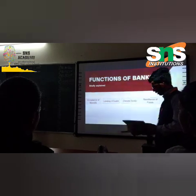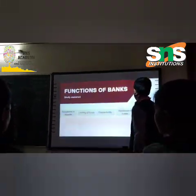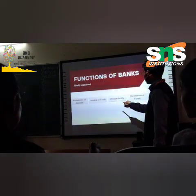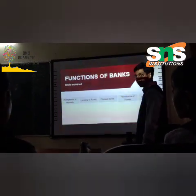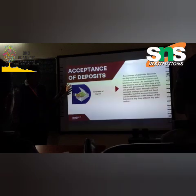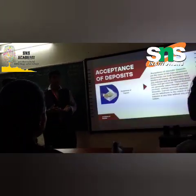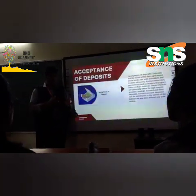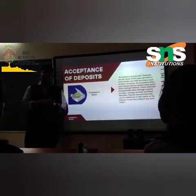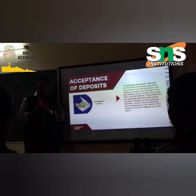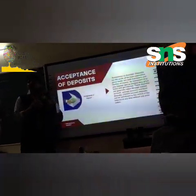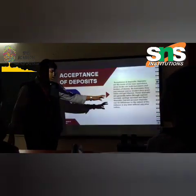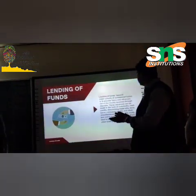The functions of commercial banks include: acceptance of deposits, lending of funds, safe deposit facilities, remittance of funds, and allied services. Acceptance of deposits and lending of funds are closely connected — depositors deposit money into the bank, which the bank lends to borrowers in the form of loans. Borrowers pay interest, which is then passed on to the depositors.